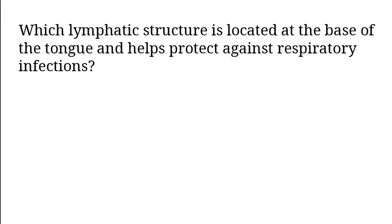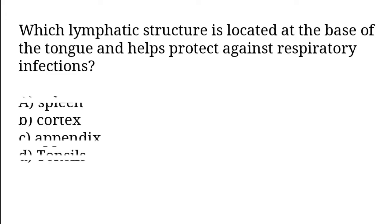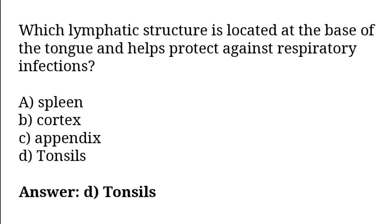Which lymphatic structure is located at the base of the tongue and helps protect against respiratory infections? A) Spleen, B) Cortex, C) Appendix, D) Tonsils. The correct answer is option D — Tonsils.